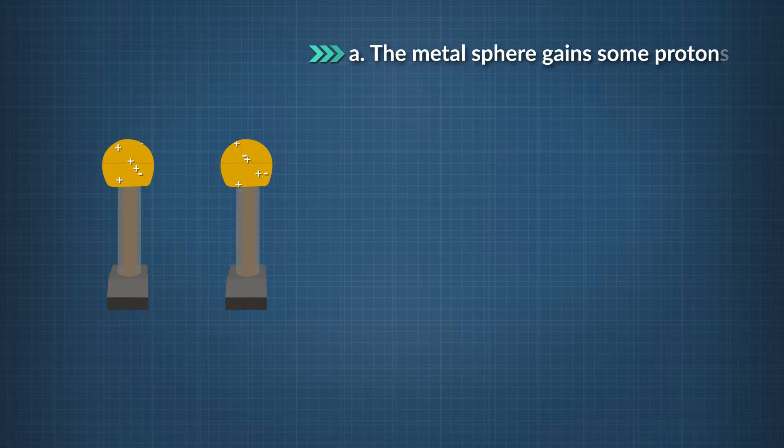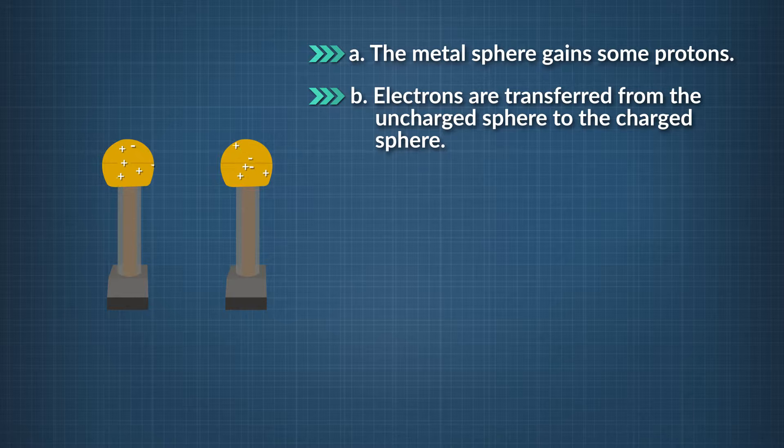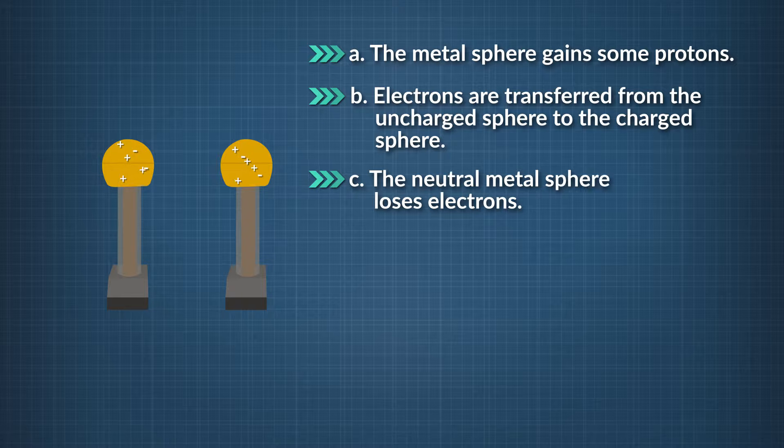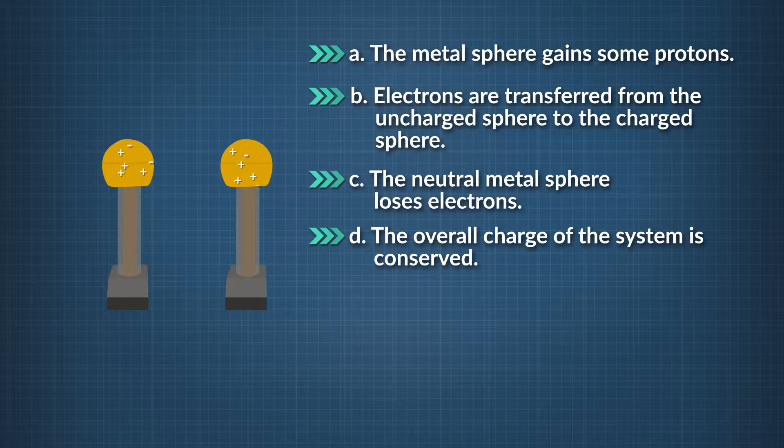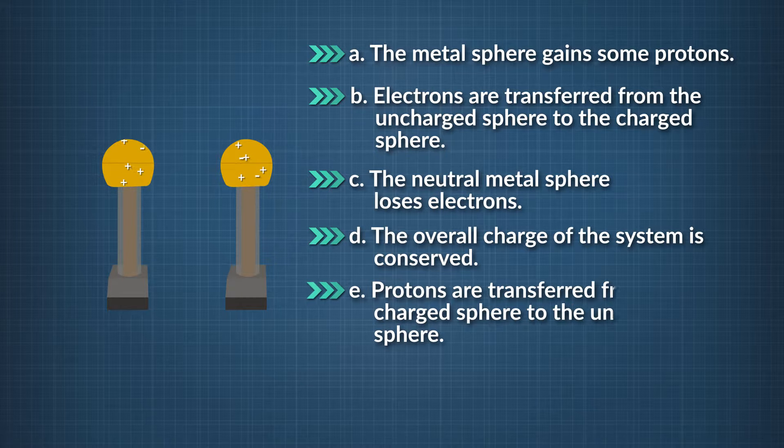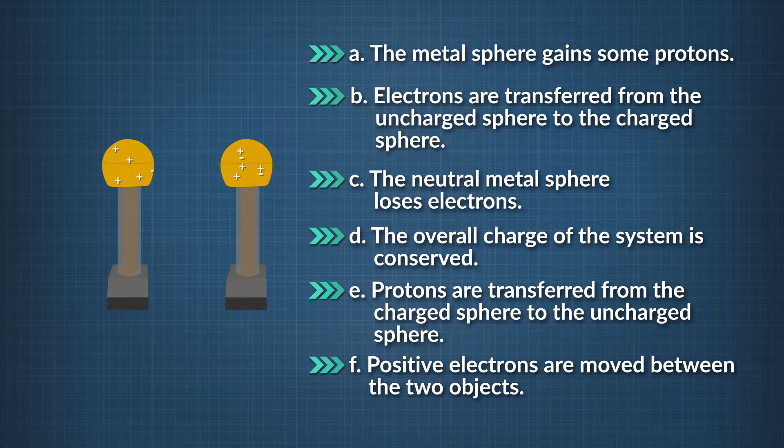A. The metal sphere gains some protons. B. Electrons are transferred from the uncharged sphere to the charged sphere. C. The neutral metal sphere loses electrons. D. The overall charge of the system is conserved. E. Protons are transferred from the charged sphere to the uncharged sphere. And F. Positive electrons are moved between the two objects.